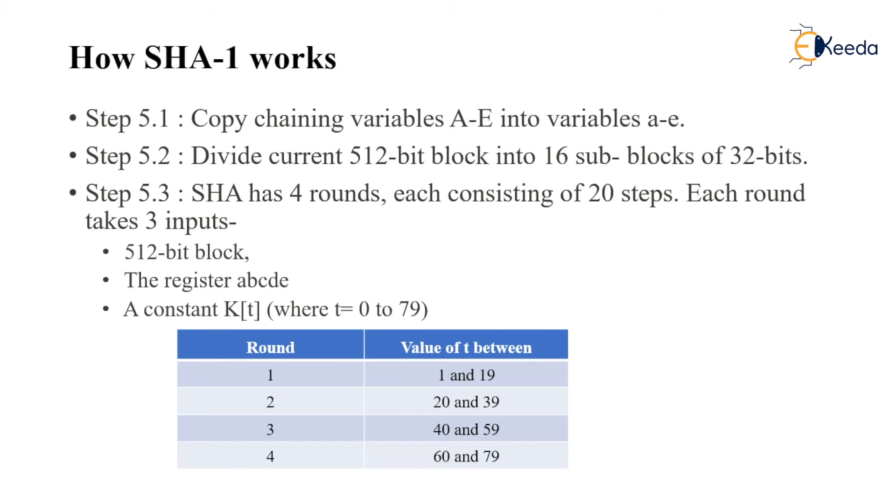Step 5.3: SHA-1 has 4 rounds, each consisting of 20 steps. Each round takes 3 inputs: the 512-bit block, the register ABCDE, and a constant KT, where the T value varies for every round. Round 1 has T values from 1 to 19, round 2 from 20 to 39, round 3 from 40 to 59, and round 4 from 60 to 79.